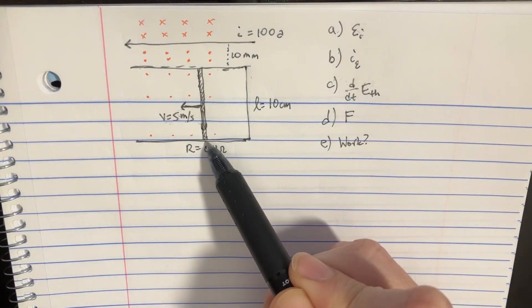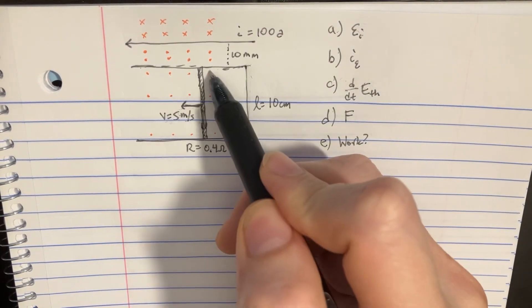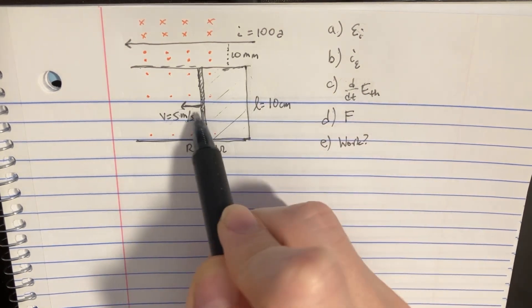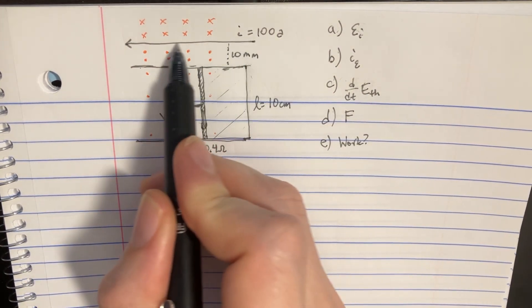We've got this setup here, and there's this area that is increasing over time. And there's a wire with a current here.